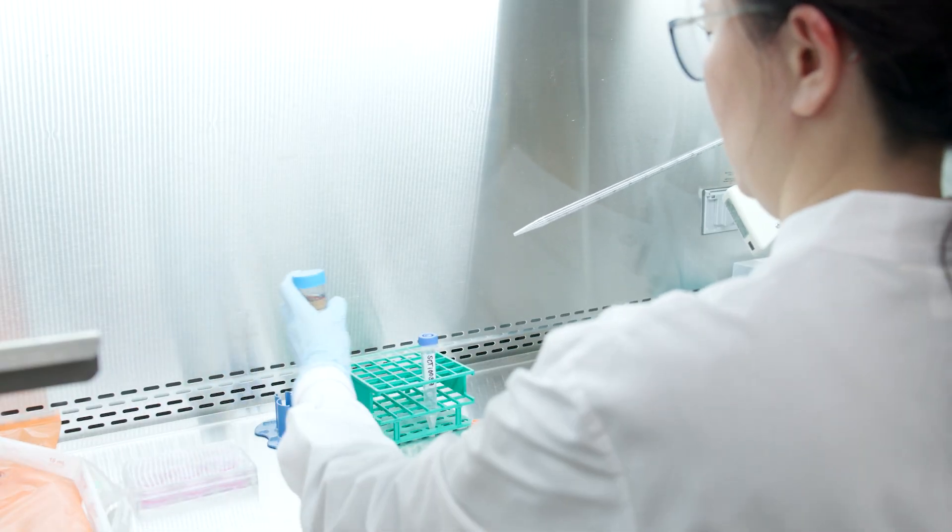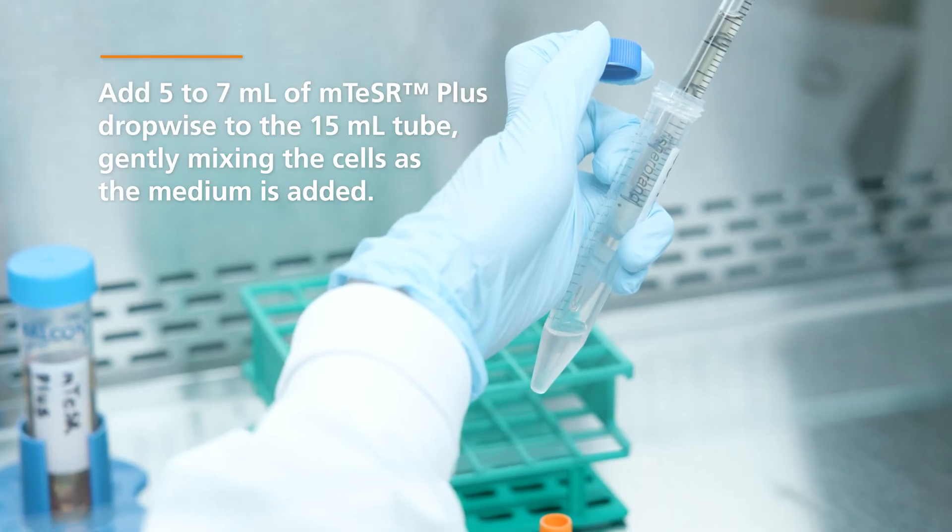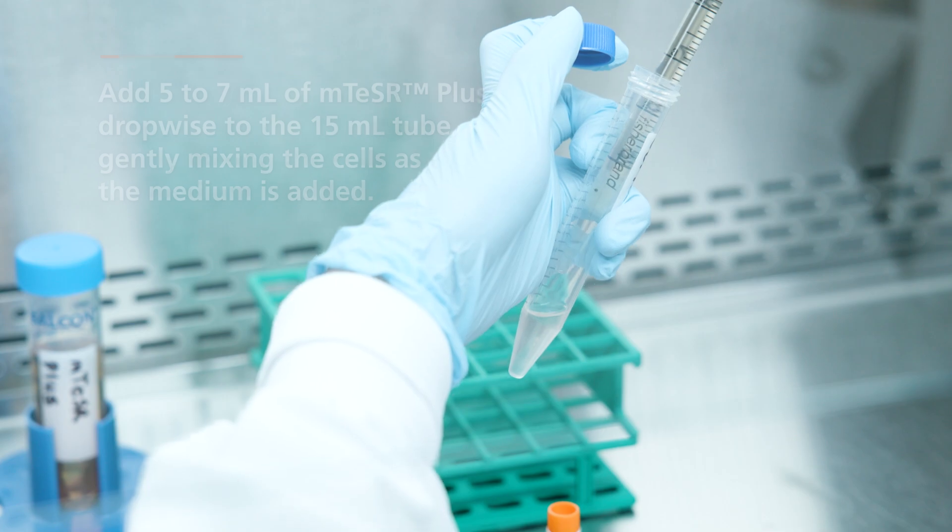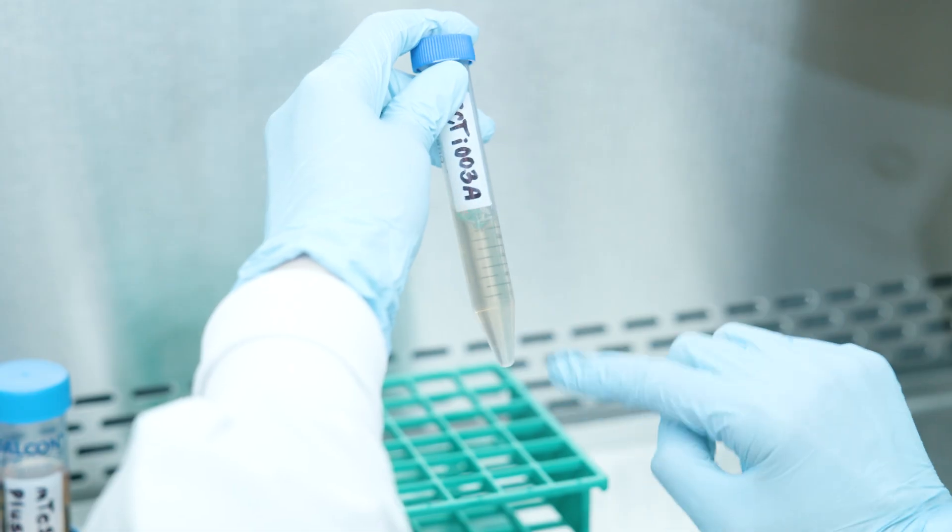Next, add 5-7 milliliters of room temperature M-Teaser Plus dropwise to the 15-milliliter tube, gently mixing the cells as the medium is added. Gently flick the tube to help with mixing the cell suspension.